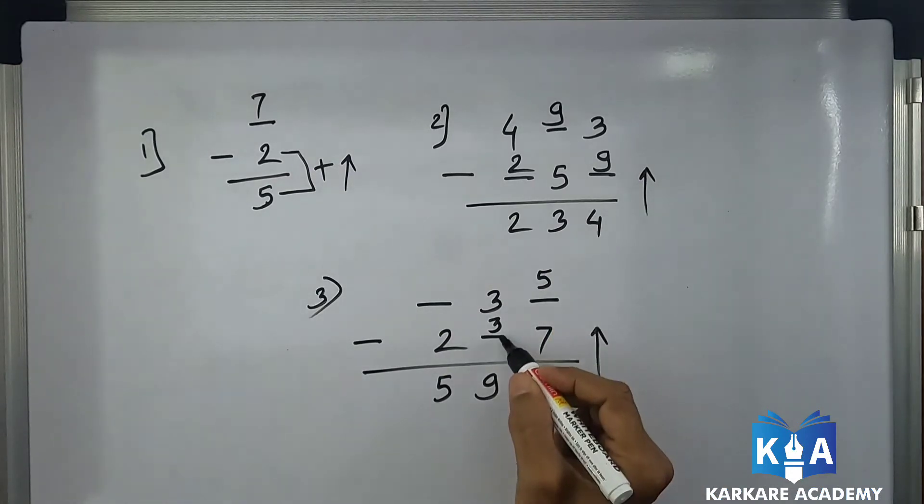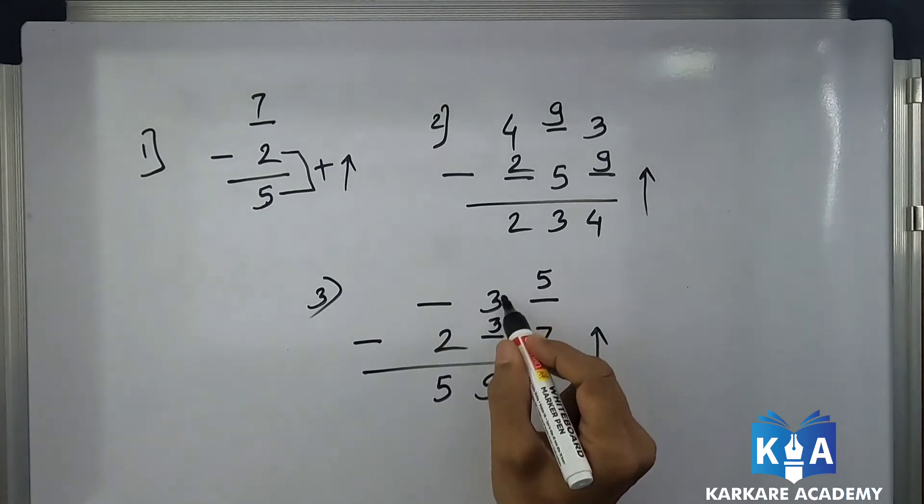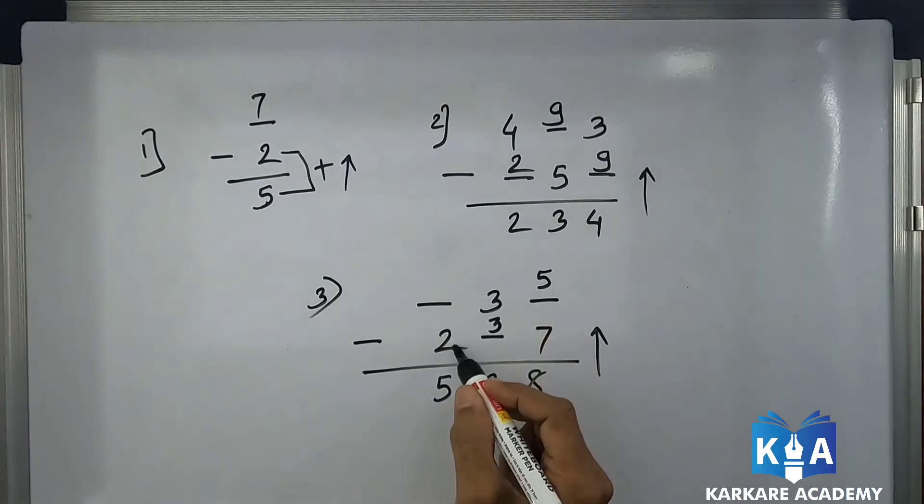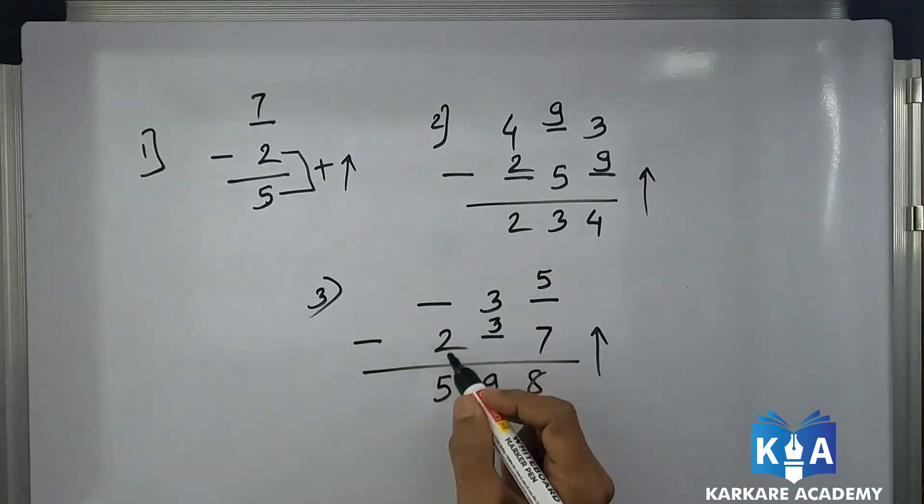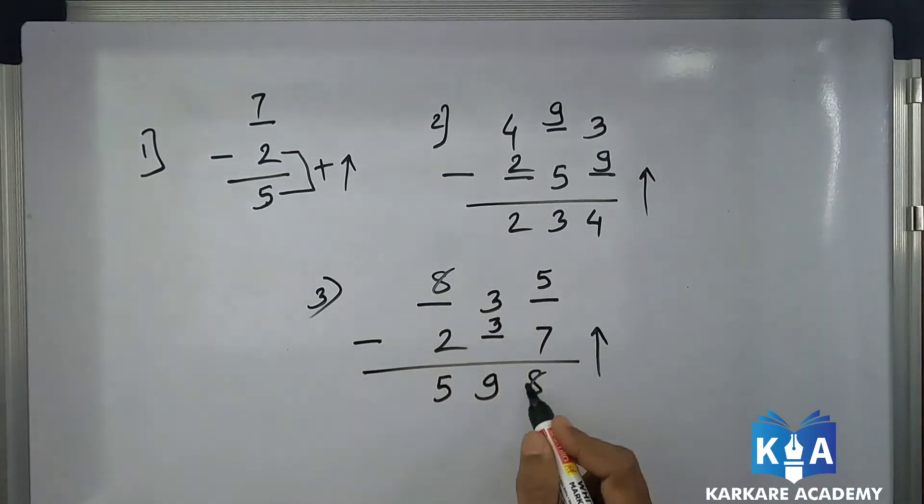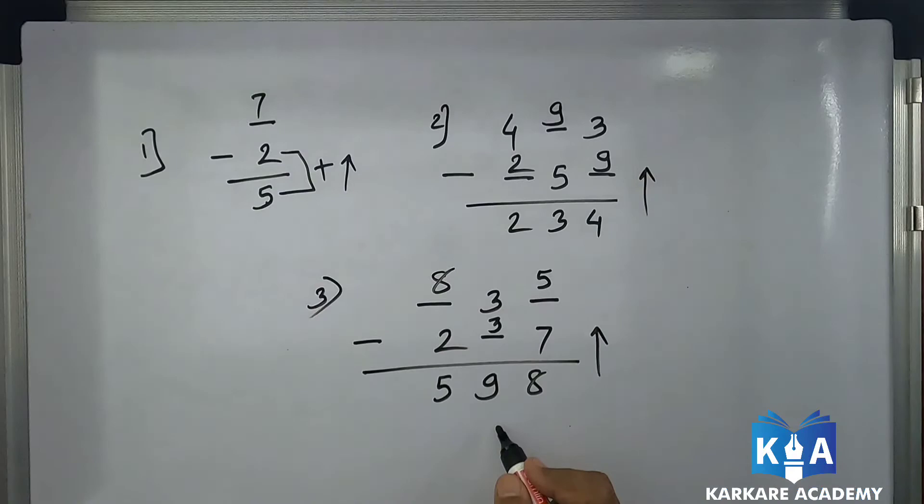8 plus 7 is 15. Now check here. Next number 4. 9 plus 4 is 13. This is a two digit number, this is the next number. So this is 3. 5 plus 3 is 8. I hope you understood. Thank you.